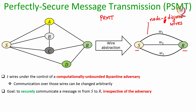In the new problem PSMT we have two goals to achieve. We want to securely communicate a message from the sender to receiver irrespective of the way the corrupt channels behave. The first goal is that the receiver should be able to obtain the sender's message correctly without any error — that is the same as PRMT.